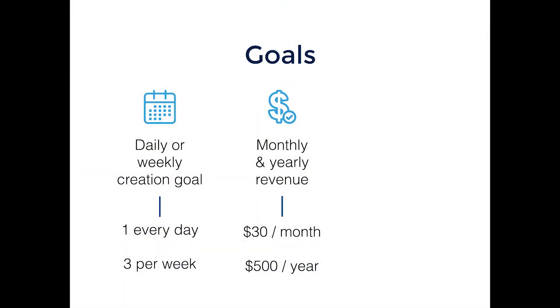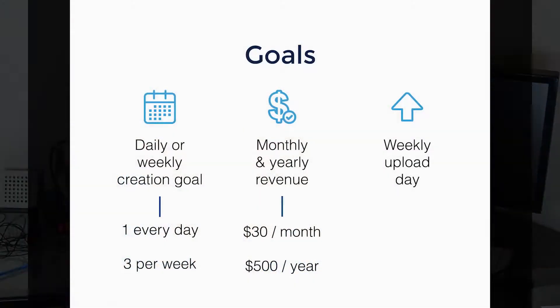A yearly goal would be something like: this first year, I just want to make $500 a year, and then really focus on hitting that goal. The third goal isn't really a goal — it's just a weekly upload day where you say, I will absolutely, no matter what, always upload my images on this day. You shouldn't really be uploading every single day. Whenever you create your images, do them all together on one day every week. For me, it's Friday — every Friday I have at least seven images that I put on all the stock sites I'm a member of. If you do it more often than that, it gets a little crazy. It also helps your consistency.